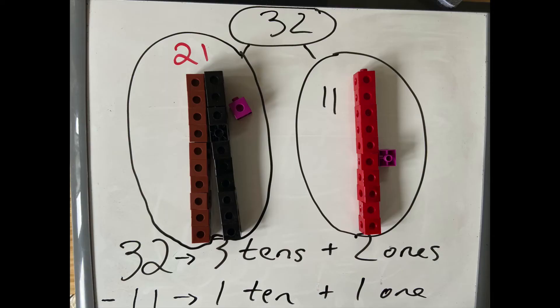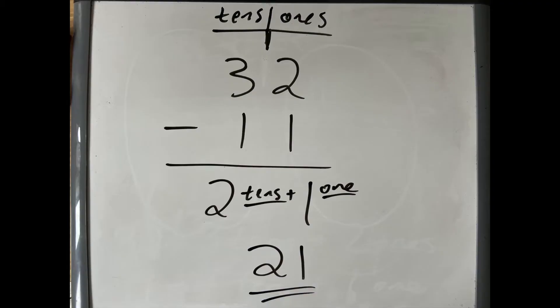That leaves me with 21, two tens and one one put back together. So I just basically treat each thing, each place, as its own separate subtraction problem and do each one separately. That's the first main idea of how place value works with respect to subtraction.